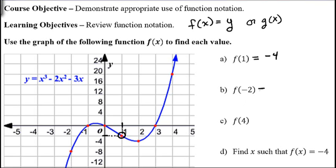For f of negative 2, we go to negative 2 on the x-axis, so that is right here. And then again, we have to go down until we hit a piece of graph. And that happens right here. Negative 4 is here, negative 8 is here. This one is negative 12. This is halfway between there, so that would be at negative 10.